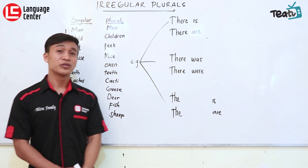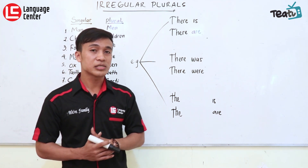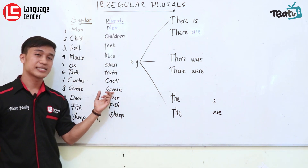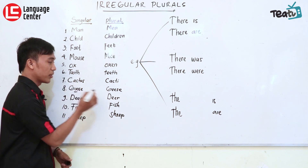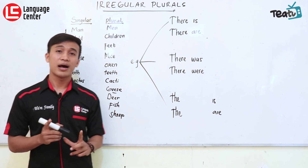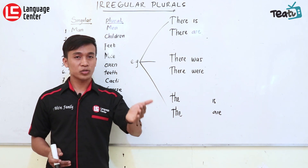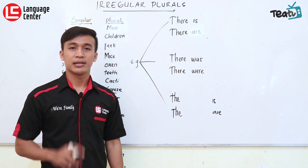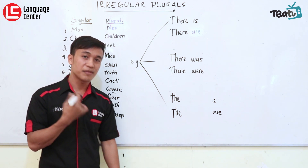Nomor delapan adalah 'goose' — angsa. Perubahannya bukan 'gooses', tapi 'geese'. Hanya perubahan vokalnya saja — double O menjadi double E. Di sini tidak ada trik, teman-teman. Kalau ini harus diubah, maka harus diingat. No trick — so you have to remember, you have to memorize.